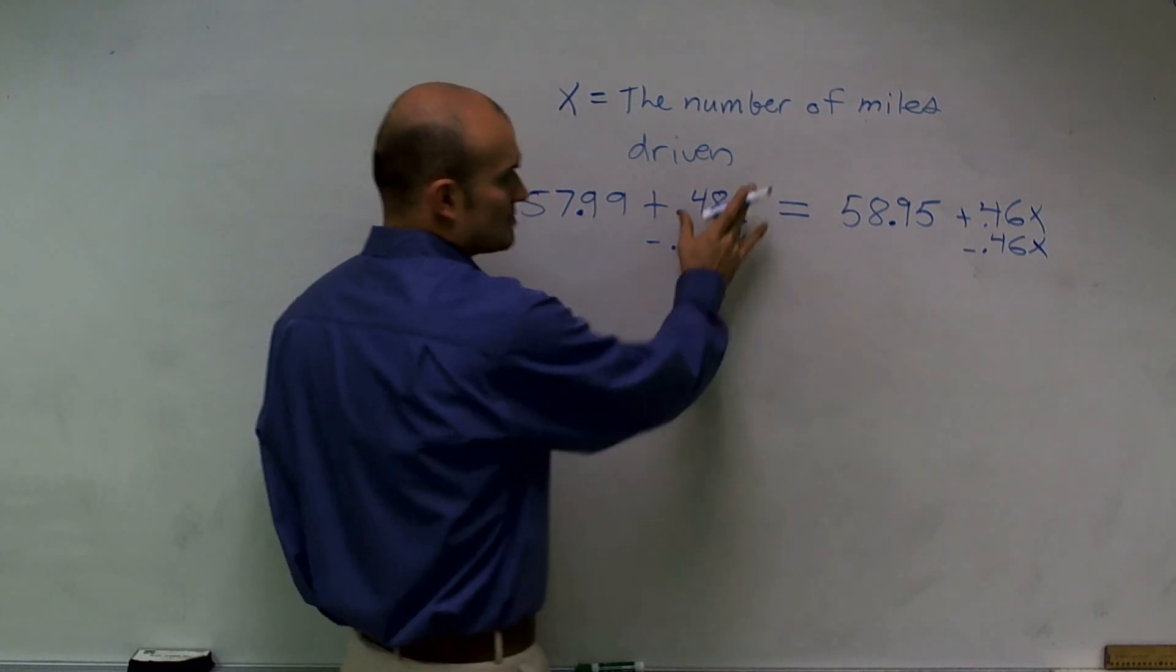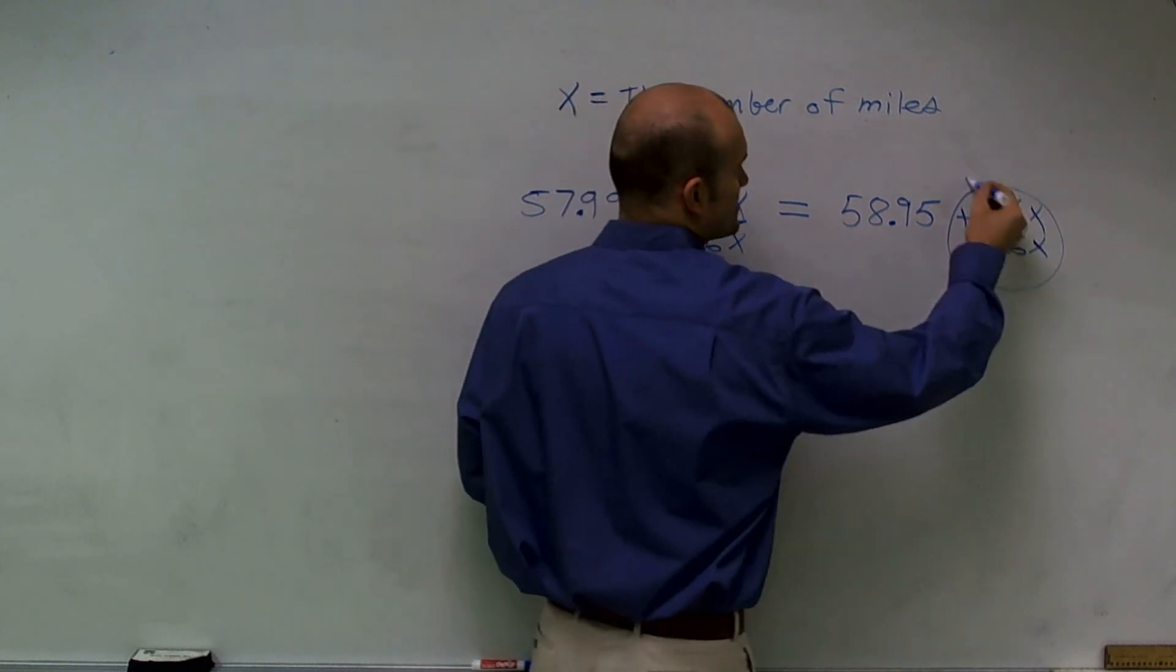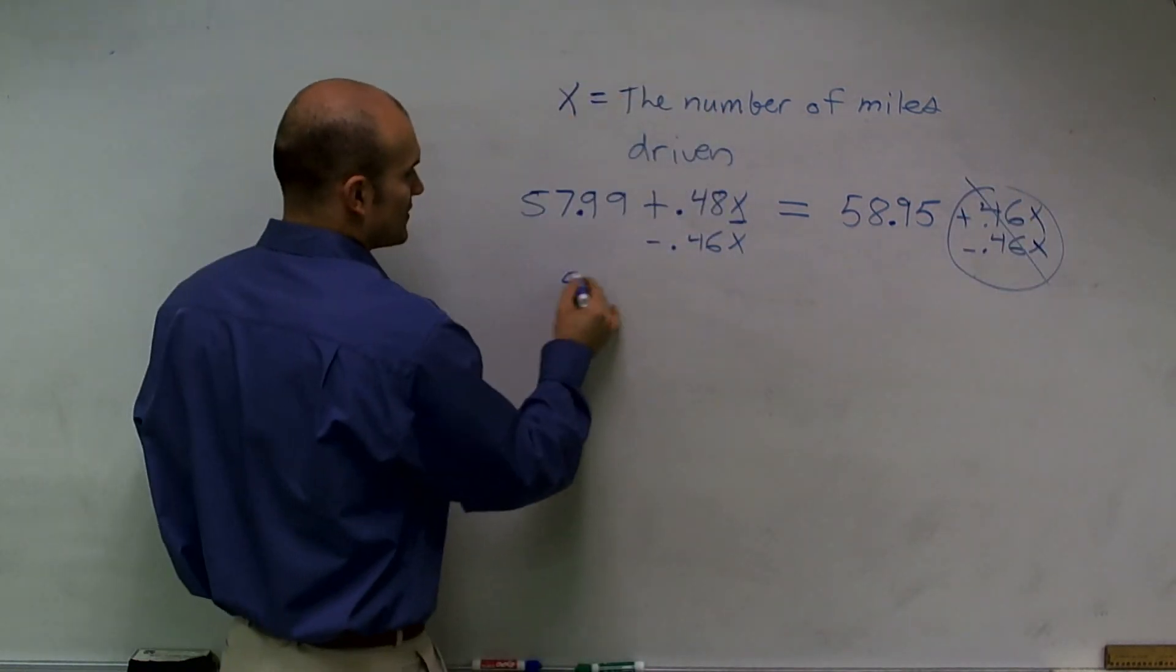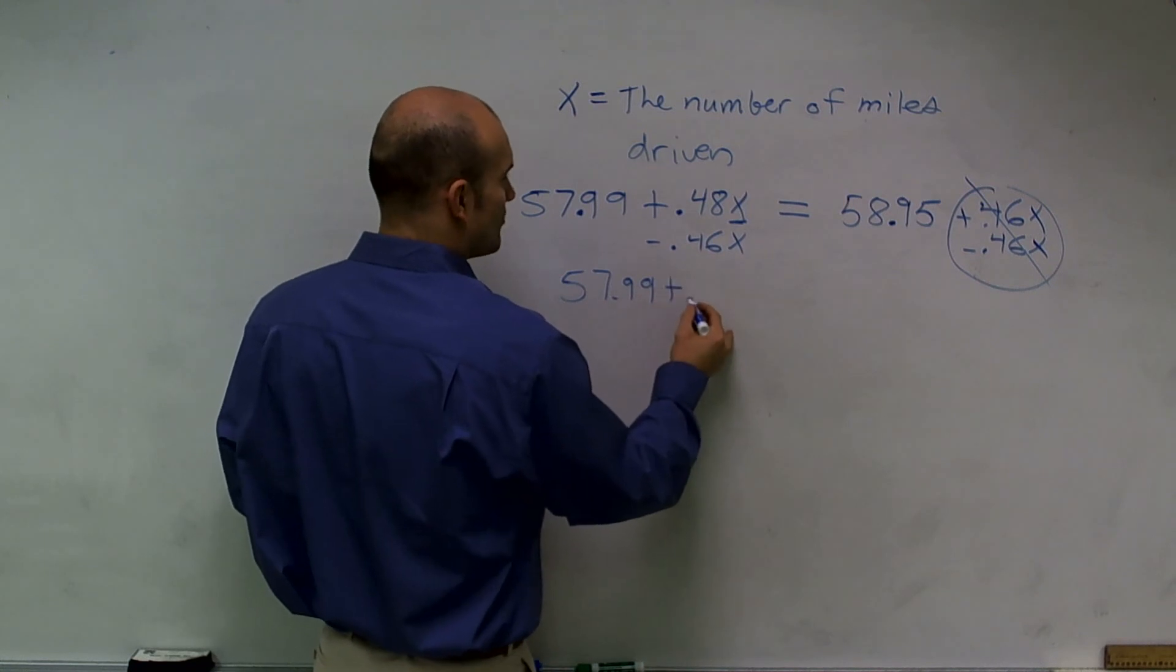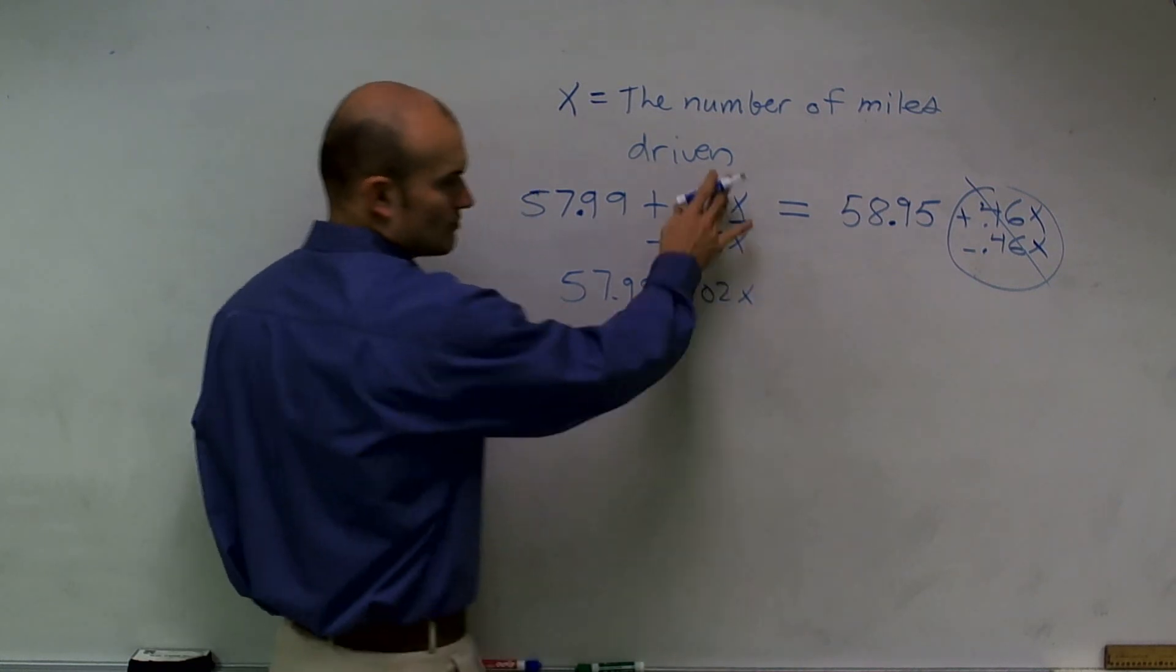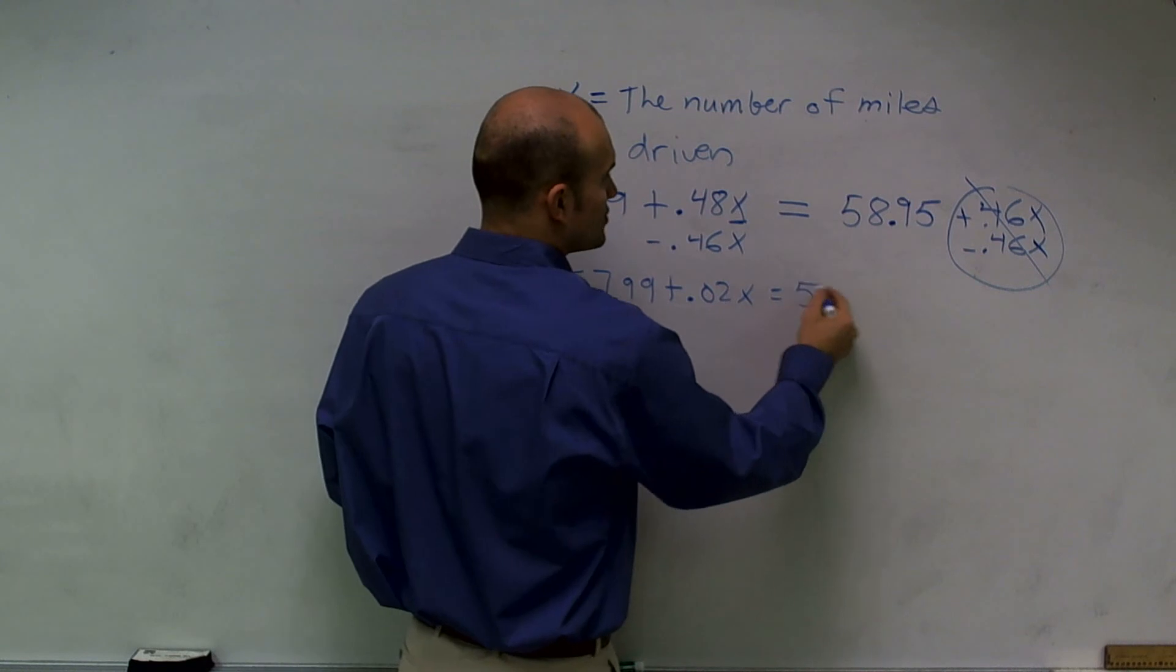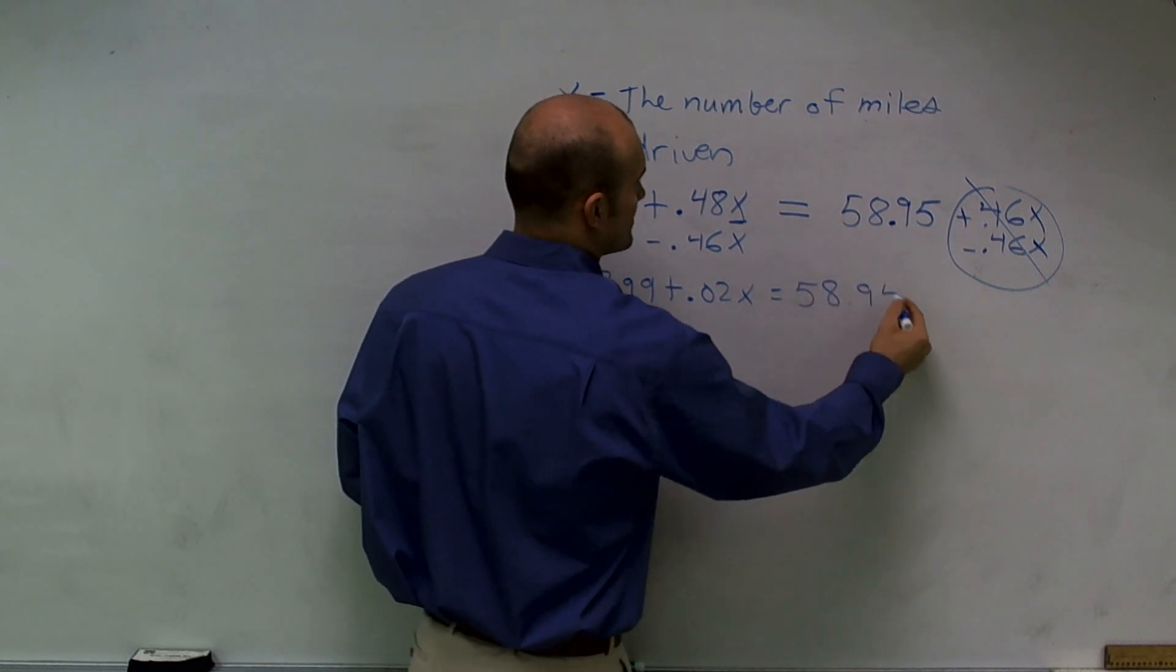Remember, I can only subtract it from my like terms. This is going to cancel to 0. And so I'm left with 57.99 plus 0.02x, when I subtract these 2, equals 58.95.